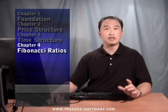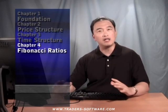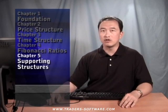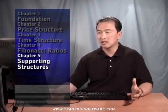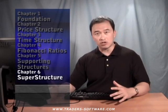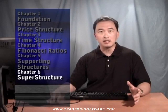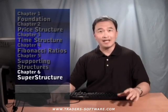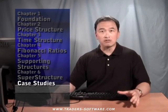Chapter four covers the Fibonacci ratios — when you apply these ratios properly, you get unbelievable accuracy in your trading. Chapter five goes over the supporting structures, which are used to align with the dominant structure. In chapter six we put everything together: the dominant structure becomes a superstructure when time and price align. You also get ten case studies, and all steps are broken down in minute detail to make sure you understand everything clearly.